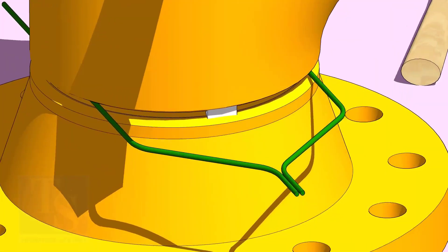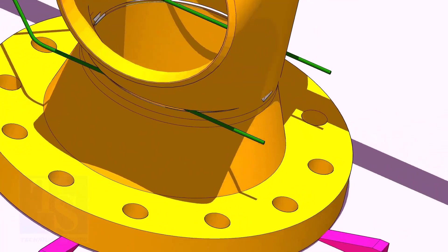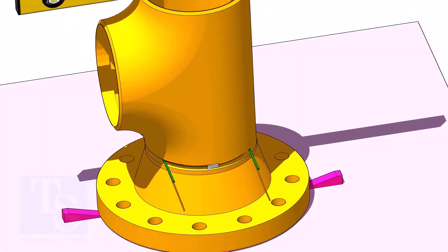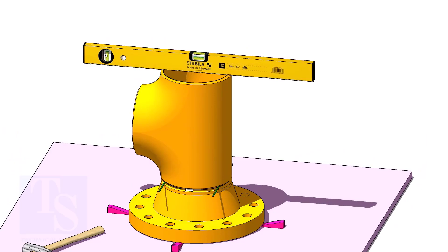Check the top level and tack weld. The sequence of the tack welding shall be 0 to 180 degree and 90 to 270 degree.